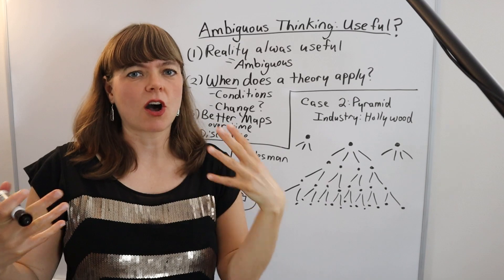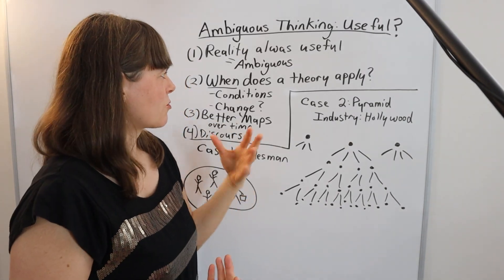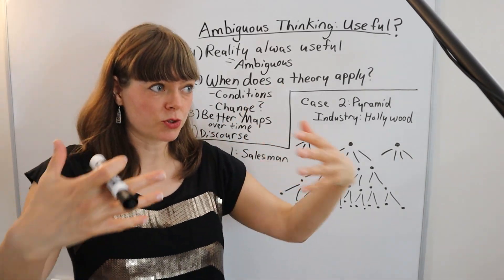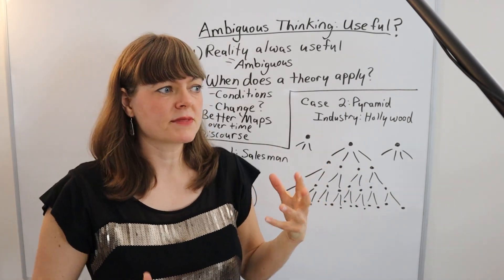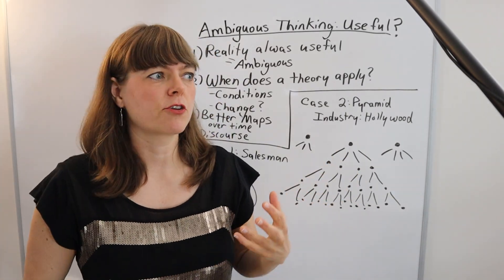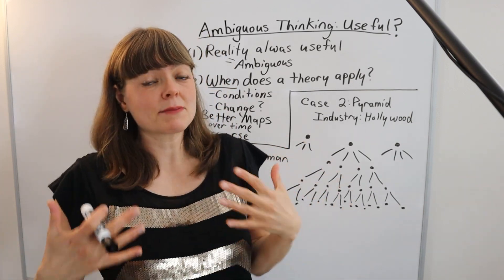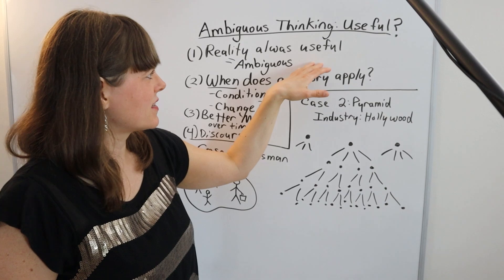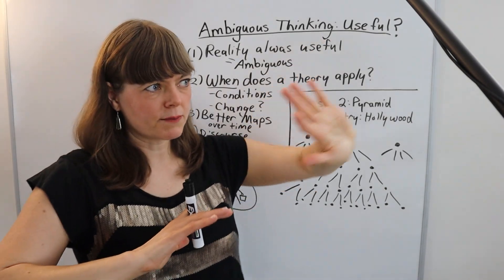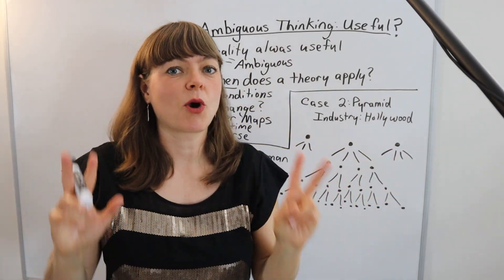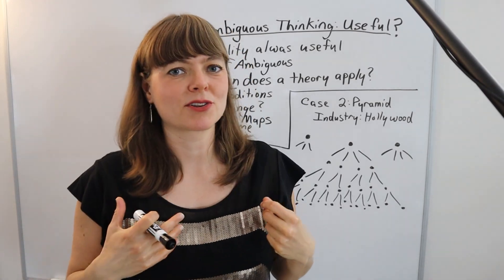One is reality is always useful and reality is ambiguous. When you look at people's real human behavior, sometimes it's genuinely ambiguous whether they're being selfish or altruistic. Sometimes you can't tell, sometimes they can't tell. And one of the things about observing reality, bringing it back to our maps, because economic models are maps...